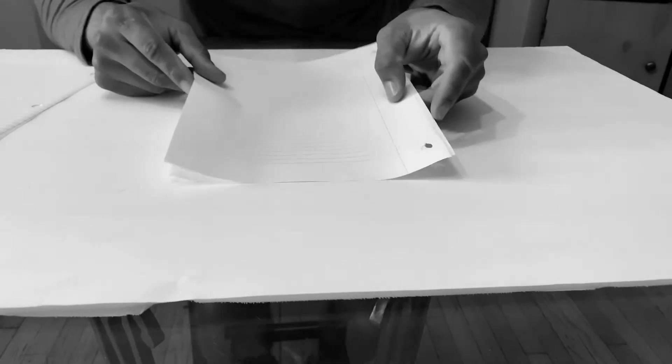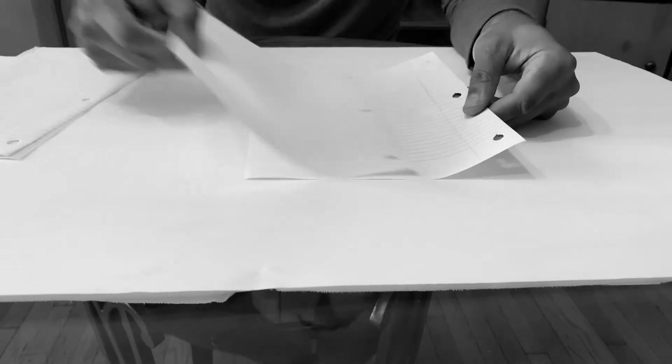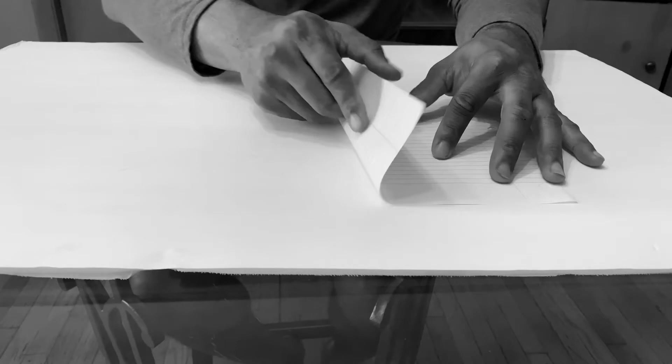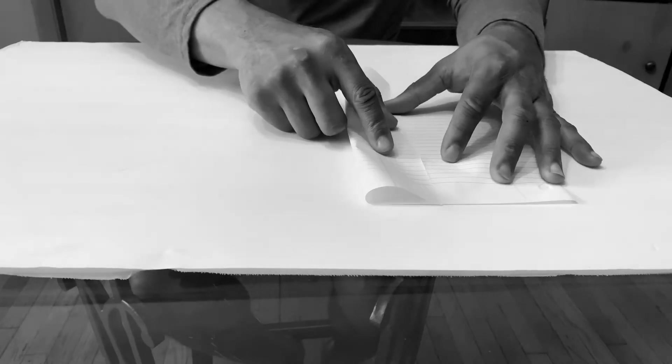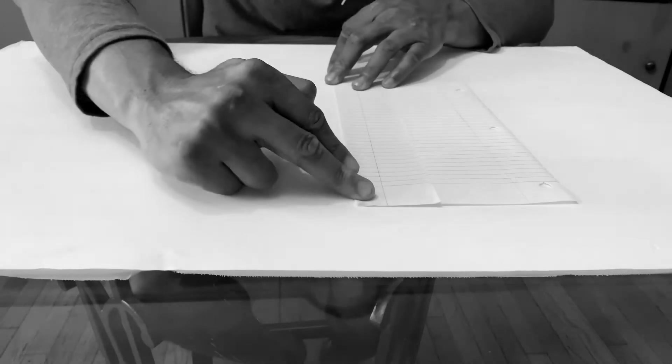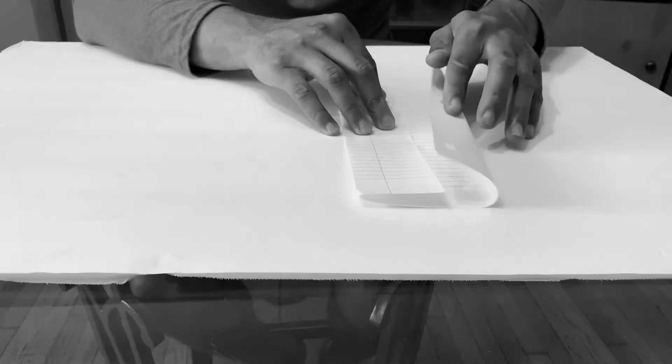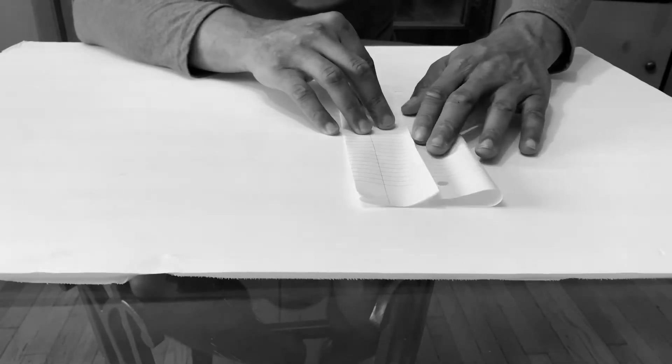So to do this activity, you'll just need one piece of paper and we're just going to fold the paper. So you take the paper, you fold one side to the middle. And you take the other side and you fold that side to the middle.